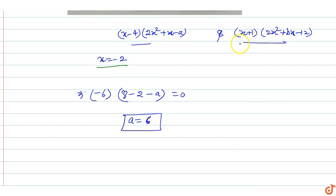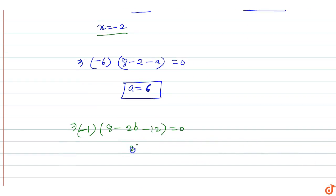Since x+2 is the factor of the second polynomial, x=-2 satisfies this equation: (-2+1)(8-2b-12) = 0, which gives (-1)(-4-2b) = 0, so 2b = -4.